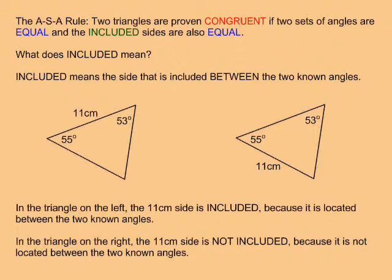The ASA rule states that two triangles are proven congruent if two sets of angles are equal and the included sides are also equal. But what does included mean? Included means that the side is included between the two known angles.